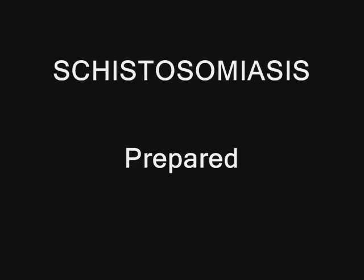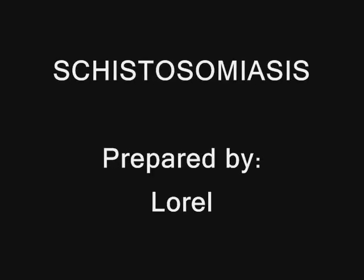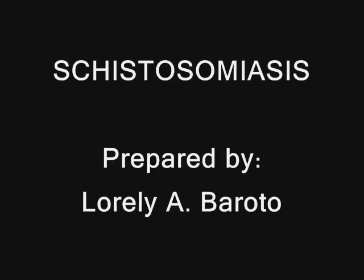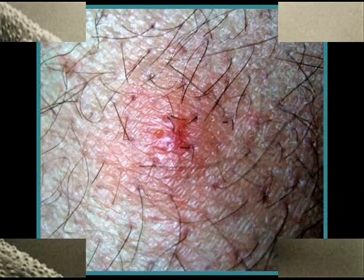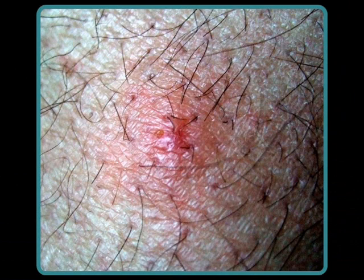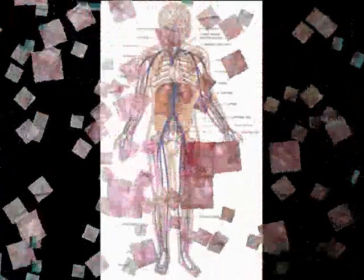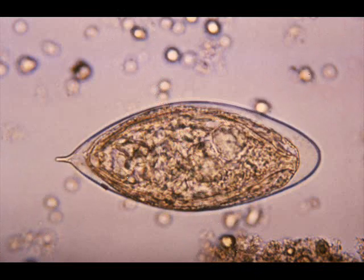I am Lorelie A. Barotto and I am going to discuss about Schistosomiasis. Schistosomiasis is a disease that is caused by parasites that enter humans by attaching to the skin, penetrating it, and then migrating through the venous system to the portal veins, where the parasites produce eggs and eventually the symptoms of acute or chronic disease.